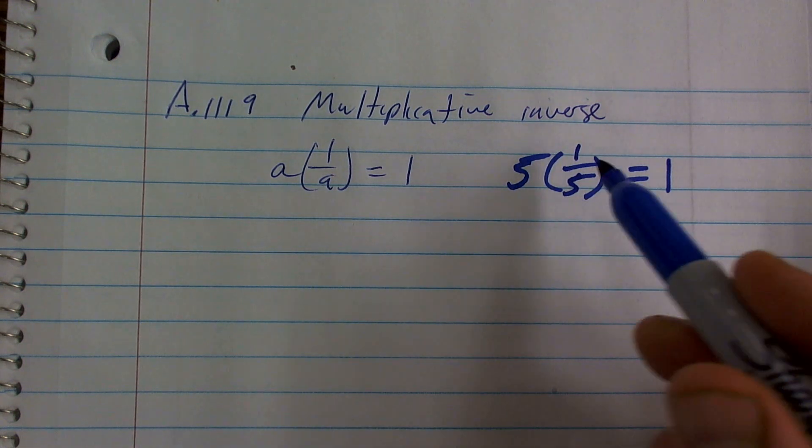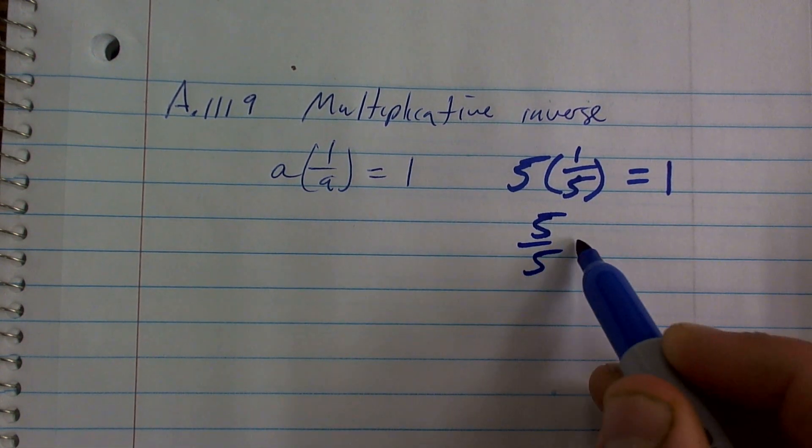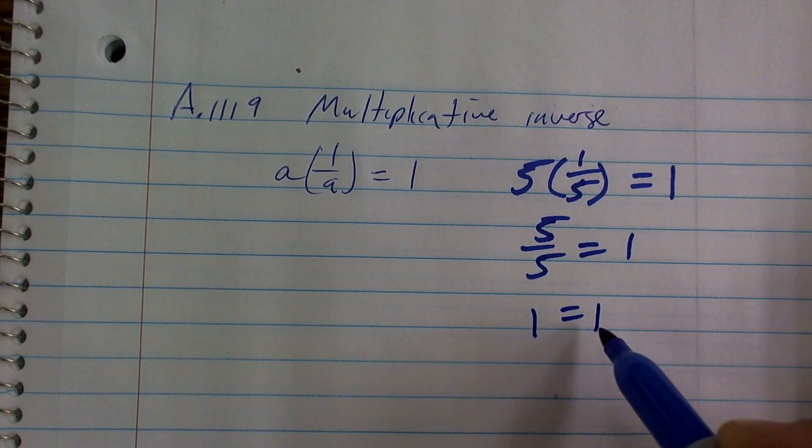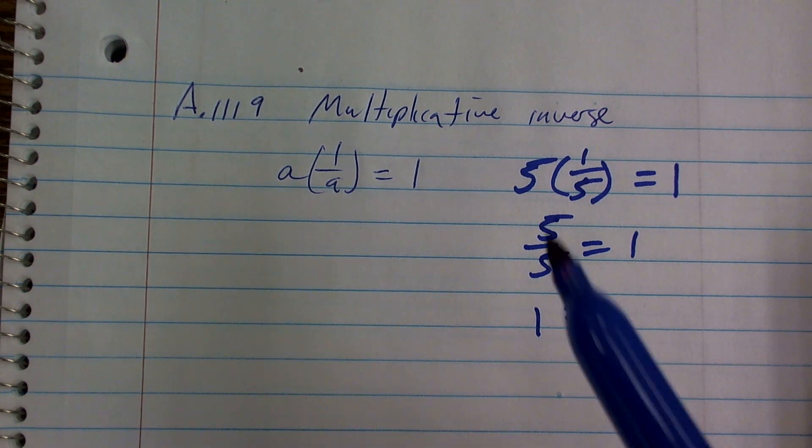And then if we write it as 5 times 1 fifth, if we multiply these fractions across, I get 5 over 5 equals 1, which 1 equals 1. So just remember the multiplicative inverse is pretty much your number over 1.